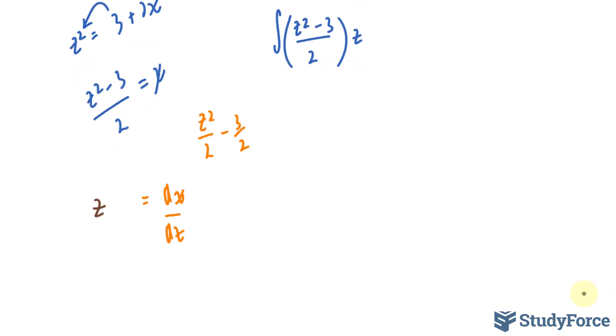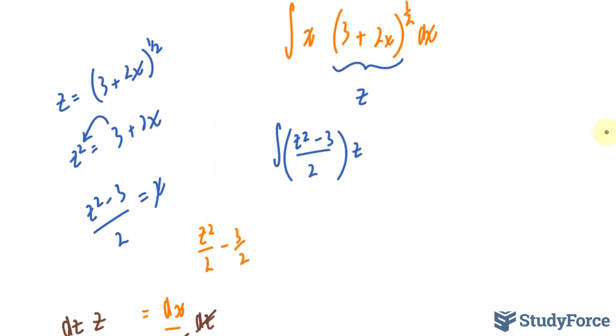So solving for dx now, all we do is multiply both sides by dz. This cancels out with this dz, and we're left with dz times z equals dx, which I can now place right here: z times dz.